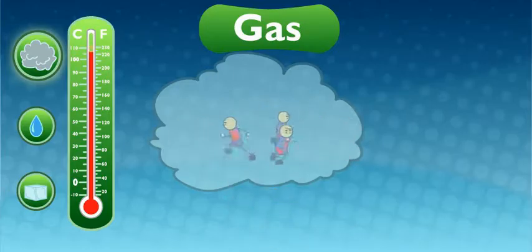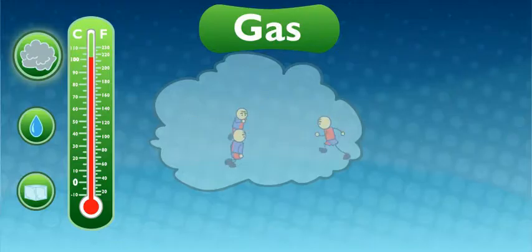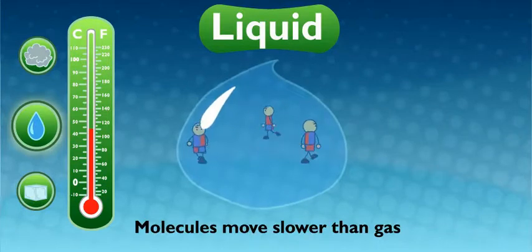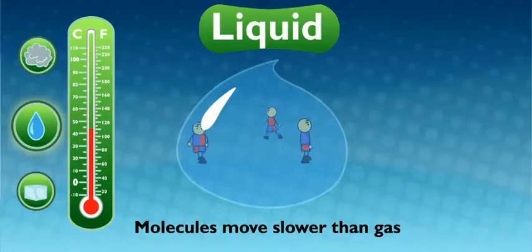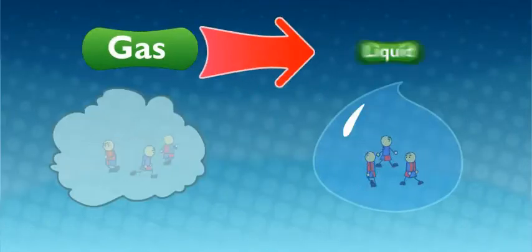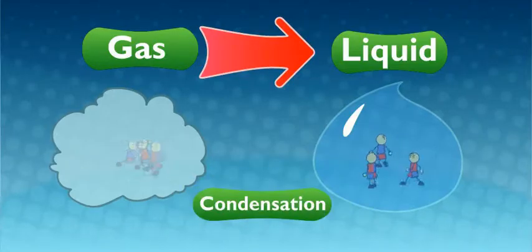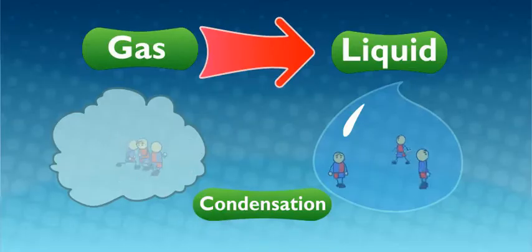If you cool those molecules down, they'll move a bit slower. Take enough heat away, and those molecules will move close enough together to become a liquid, the second state of matter. Exactly how close do they have to get to turn into a liquid? Well, they've still got some room to move. That's why a liquid can change its shape. So when the molecules get cold enough and close enough together, they turn from a gas to a liquid? Yep. And when gas turns to liquid, it's called condensation. Gas to liquid. Condensation. Gotcha.